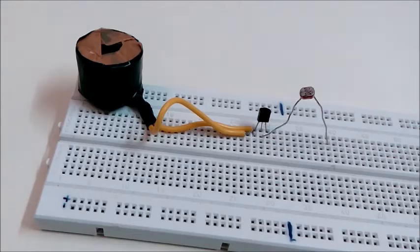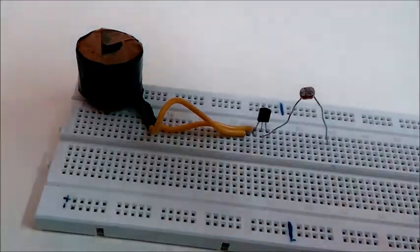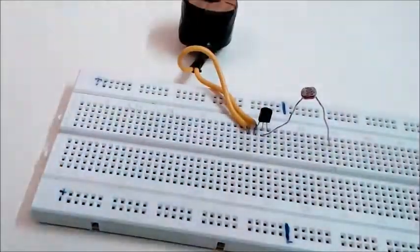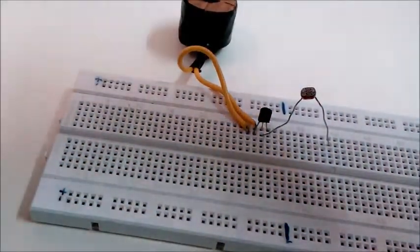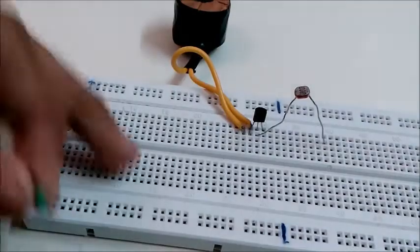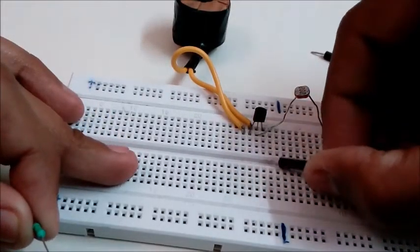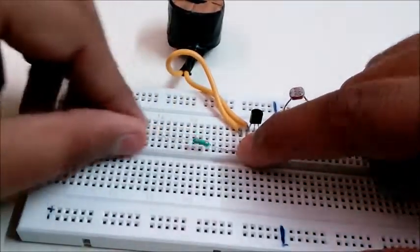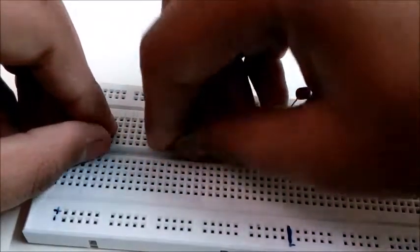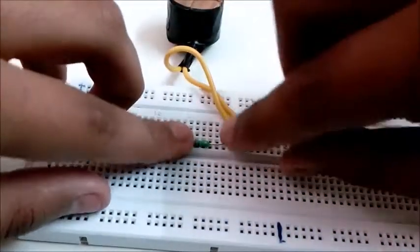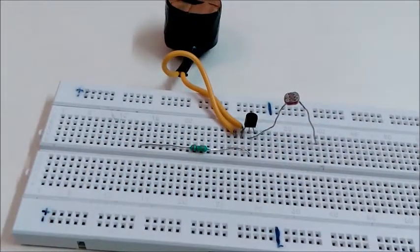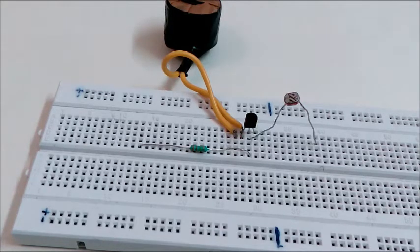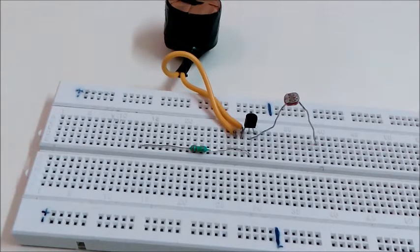resistor to the middle leg of the BC547, the middle leg. I guess I'm gonna put it. Now the next step is to connect the wires.